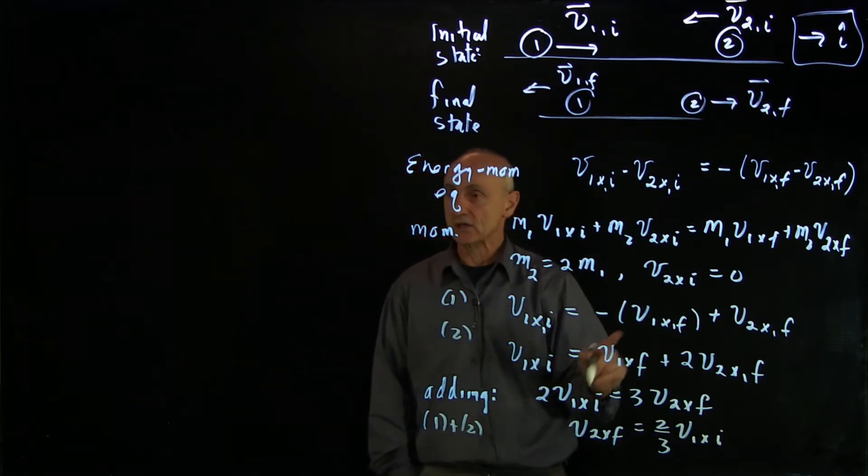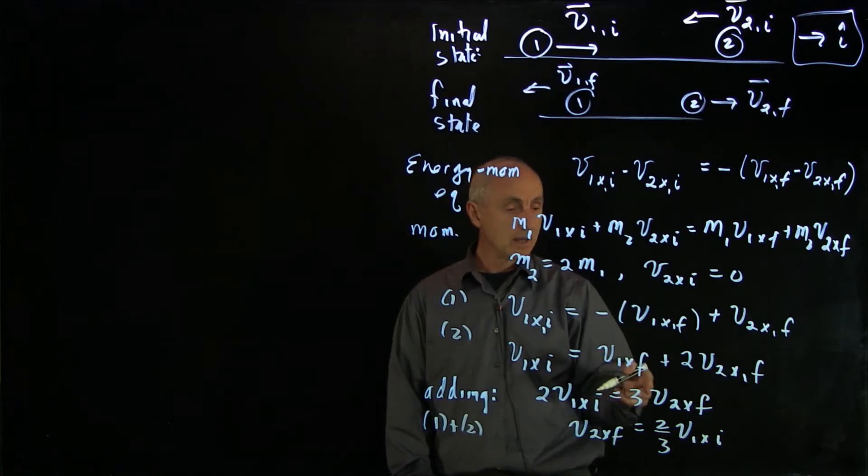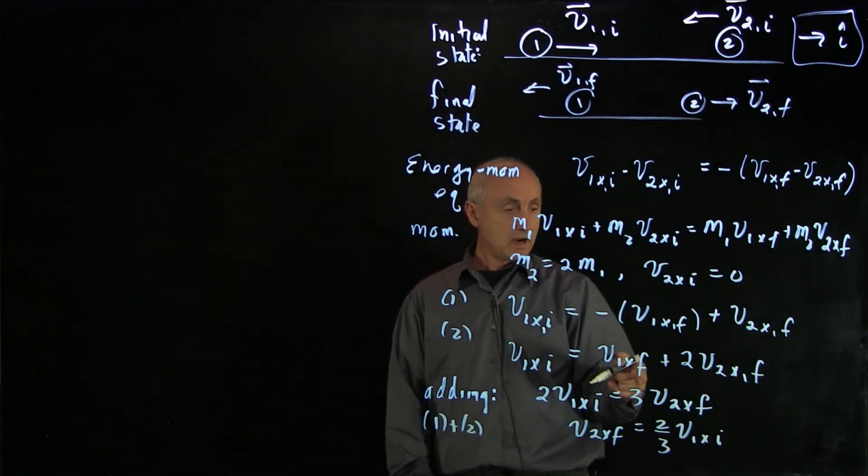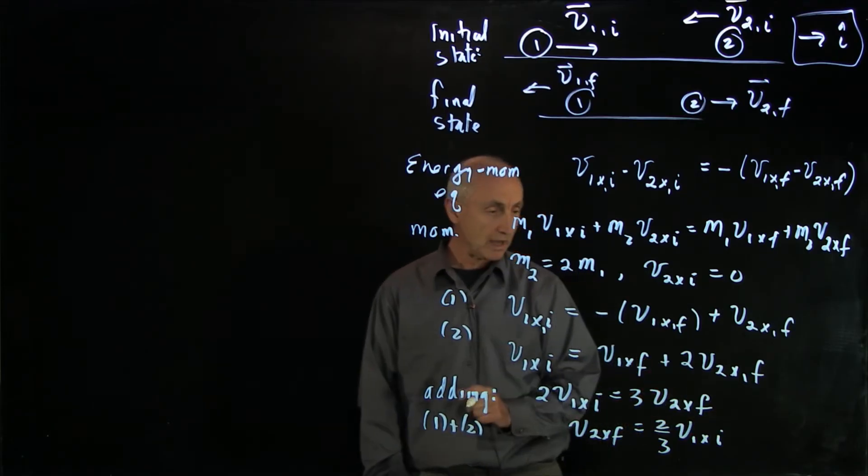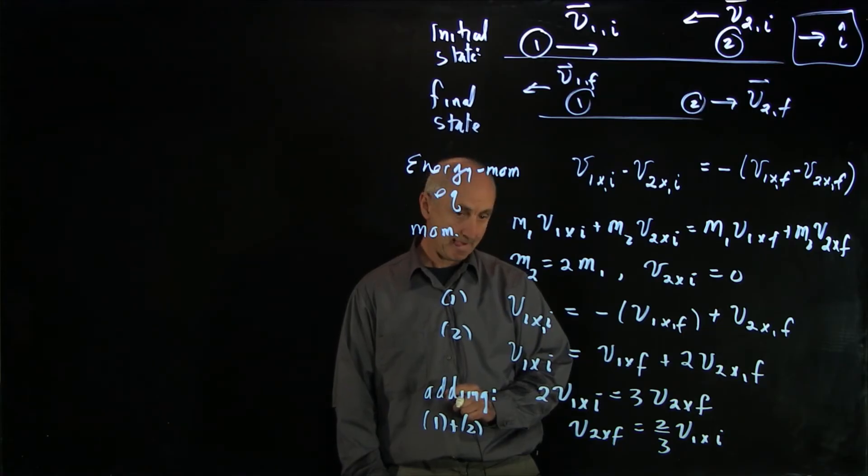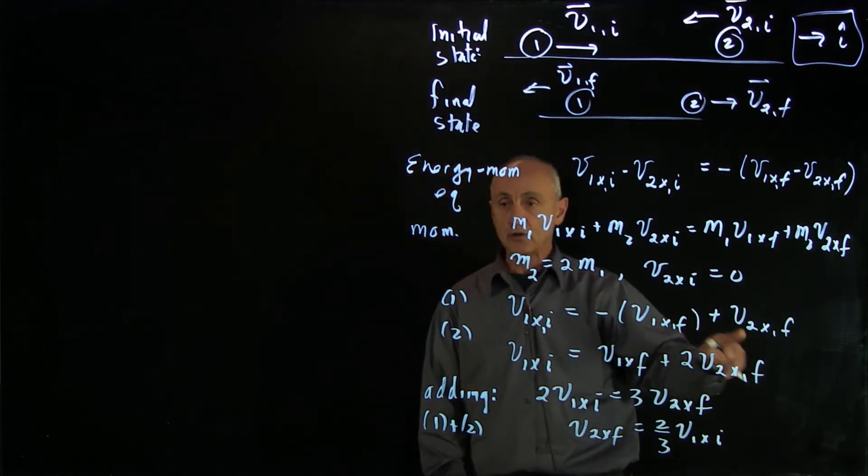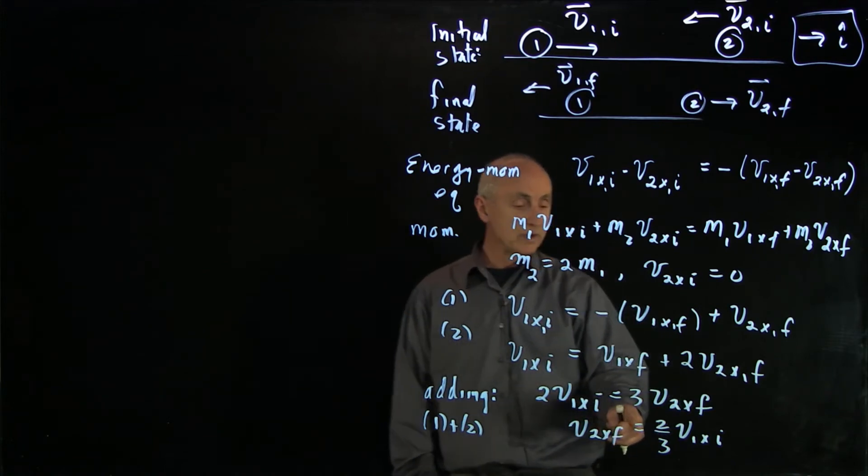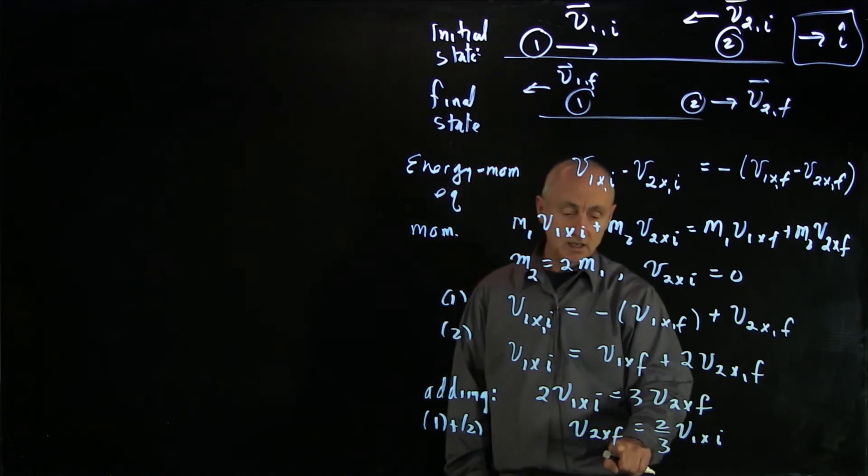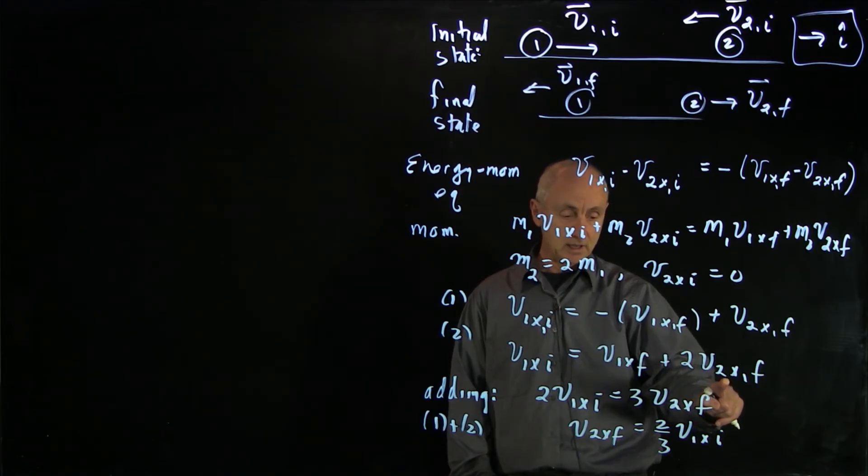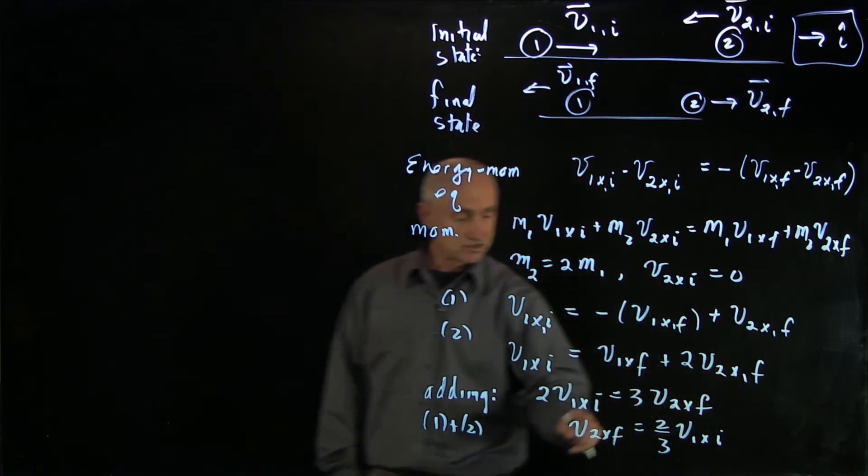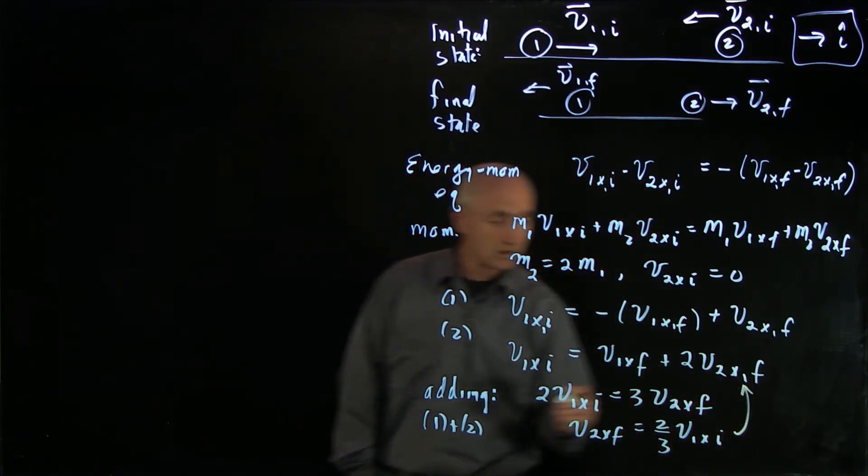And now to find v1 x final, let's see what we'll do there. So we can do this a variety of different ways. I think the simplest thing here to do, we could eliminate v2 x final by multiplying through by minus 2, or we can simply substitute in v2 x final right here. So let's do that, let's substitute that in right there.